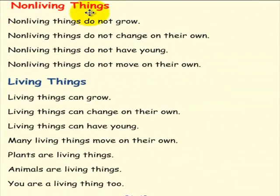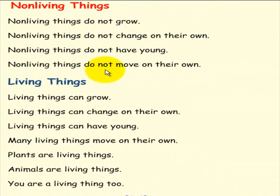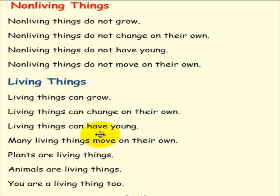Non-living things do not grow. Non-living things do not change on their own. Non-living things do not have young. Non-living things do not move on their own. Living things can grow. Living things can change on their own. Living things can have young. Many living things move on their own. Plants are living things. Animals are living things. You are a living thing too.